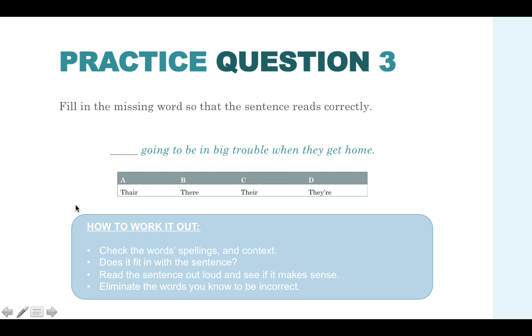Let's start with answer option A. We have T-H-A-I-R. Well, this is not actually a word. So you can eliminate this answer automatically. Then we have there, there and they're. Remember, this is a contracted word for they are. They're going to be in big trouble when they get home. So you know that in fact this is going to be answer D because it's talking about they are going to be in big trouble when they get home. Answer B, you know it's not going to be right because that's talking about a particular place. And answer option C is not right because that's talking about someone in possession.